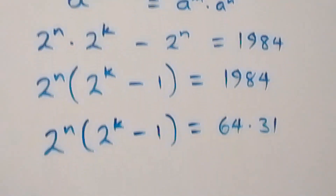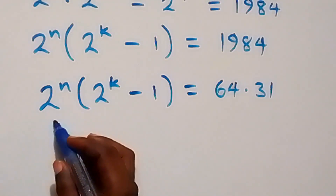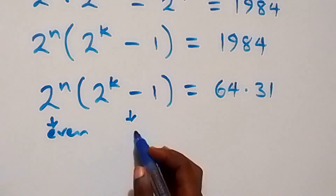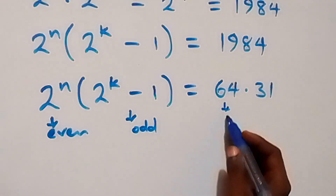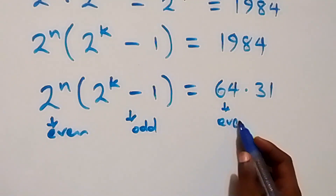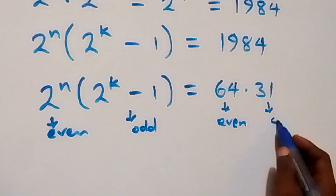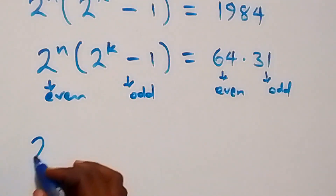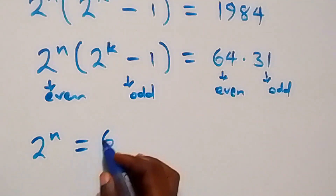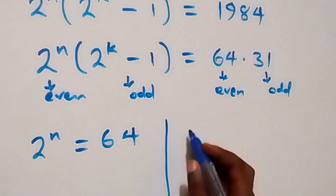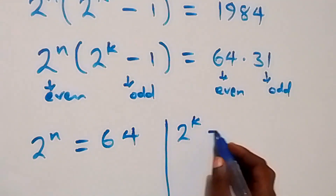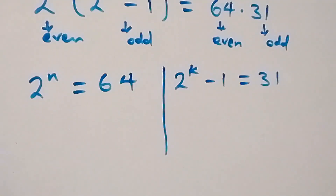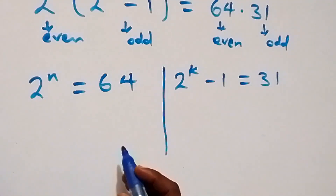Now, 2 raised to power n is an even number, while (2 raised to power k minus 1) is an odd number. Similarly, 64 is even and 31 is odd. It follows that we can equate: 2 raised to power n equals 64, and also 2 raised to power k minus 1 equals 31.